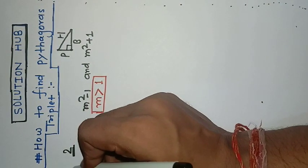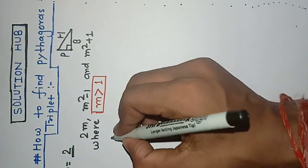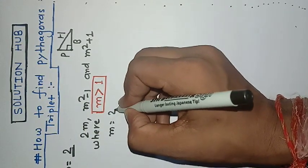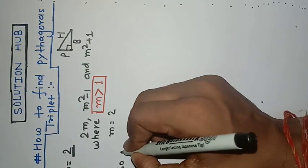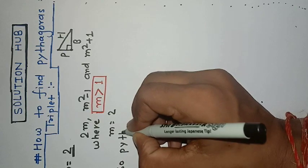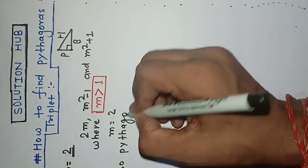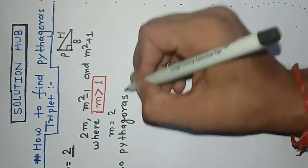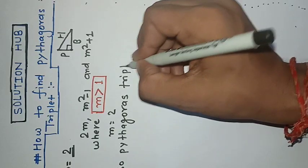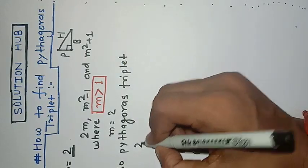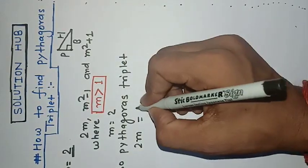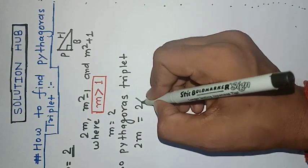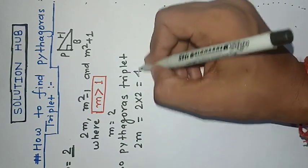We have m equal to 2, so the Pythagorean triplet will be: first we should find 2m, and 2m equals 2 times 2, which equals 4.